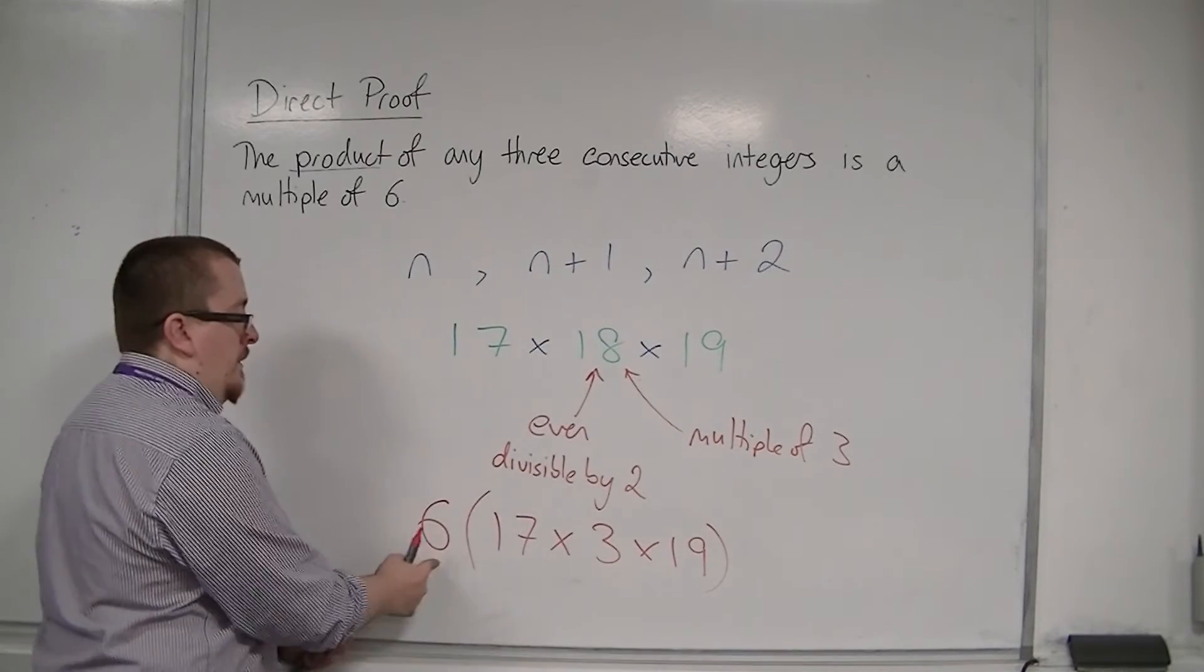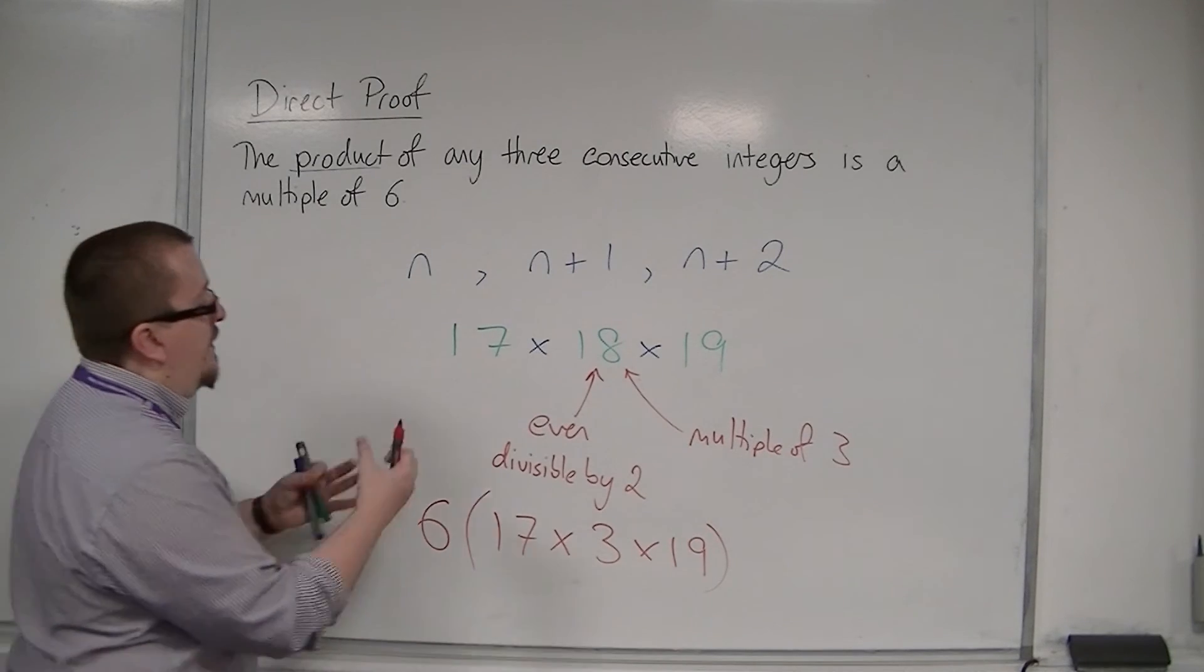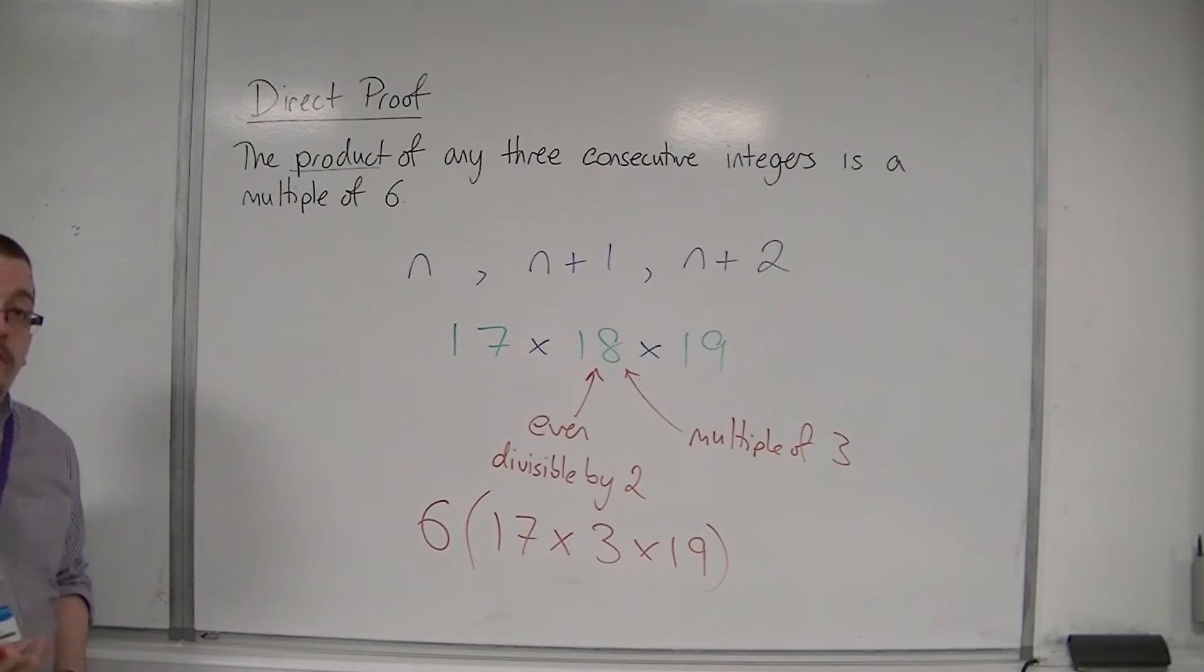This is an integer times an integer, and so, that means that these three consecutive integers are a multiple of six.